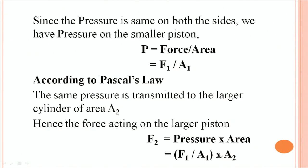Now look at the smaller side. The pressure is given by F1 divided by A1. This ratio must be equal to the pressure on the larger side, which is given by F2 divided by A2. Since the transfer of pressure is undiminished, both pressures are equal to each other. This makes it very easy to lift any heavy object by using a very small amount of force on one side.